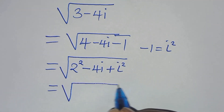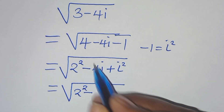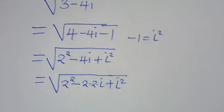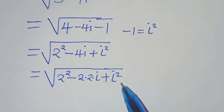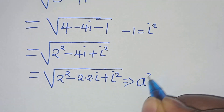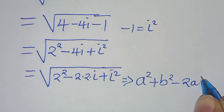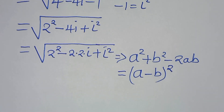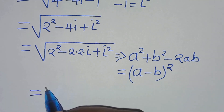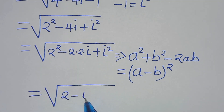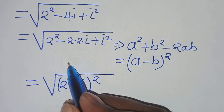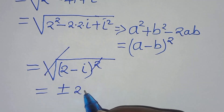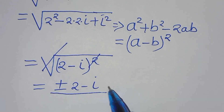The next step is that we have the square root of 2 squared minus 4i, which can be expressed as 2 times 2 times i, then plus i squared. Now we find that 2 squared minus 2 times 2 times i plus i squared is in the form of a squared minus 2ab plus b squared, which we can express as the square root of 2 minus i raised to the power of 2. Eliminating the square root sign, this implies we have plus or minus 2 minus i. So this is the solution by applying method 1.